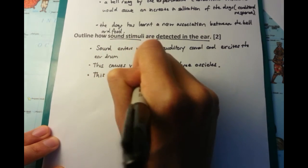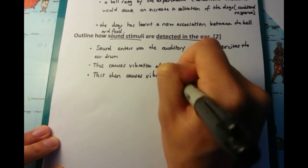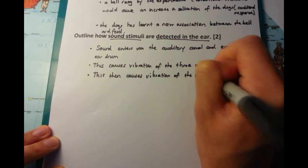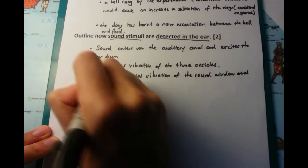After you have the amplification, then the vibration of the ossicles then gets transferred to the round window. And this is the hearing apparatus of the human.